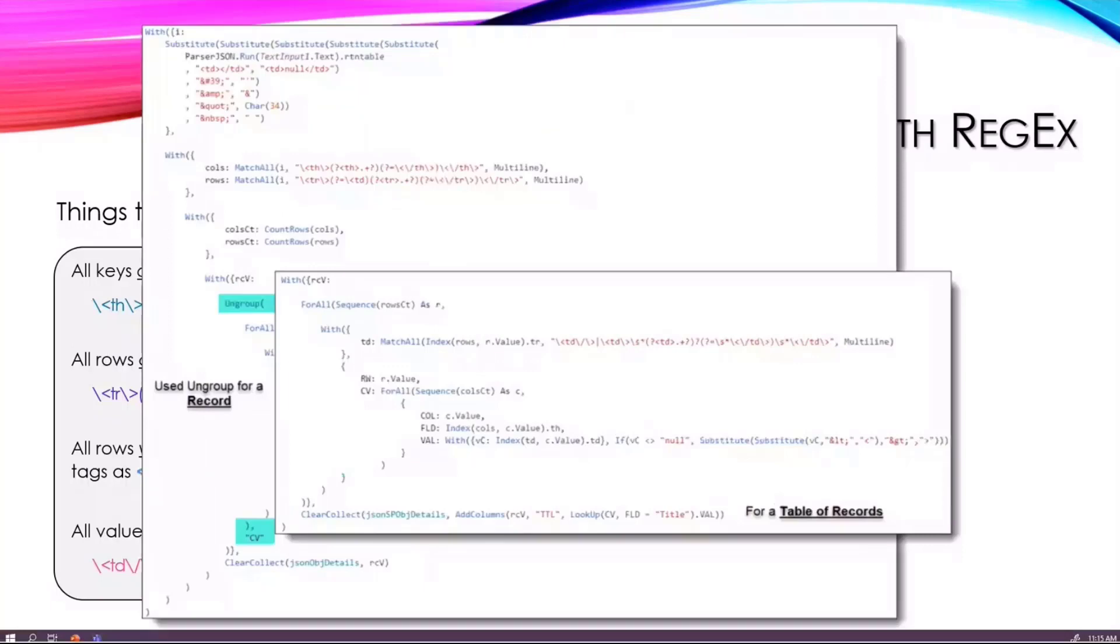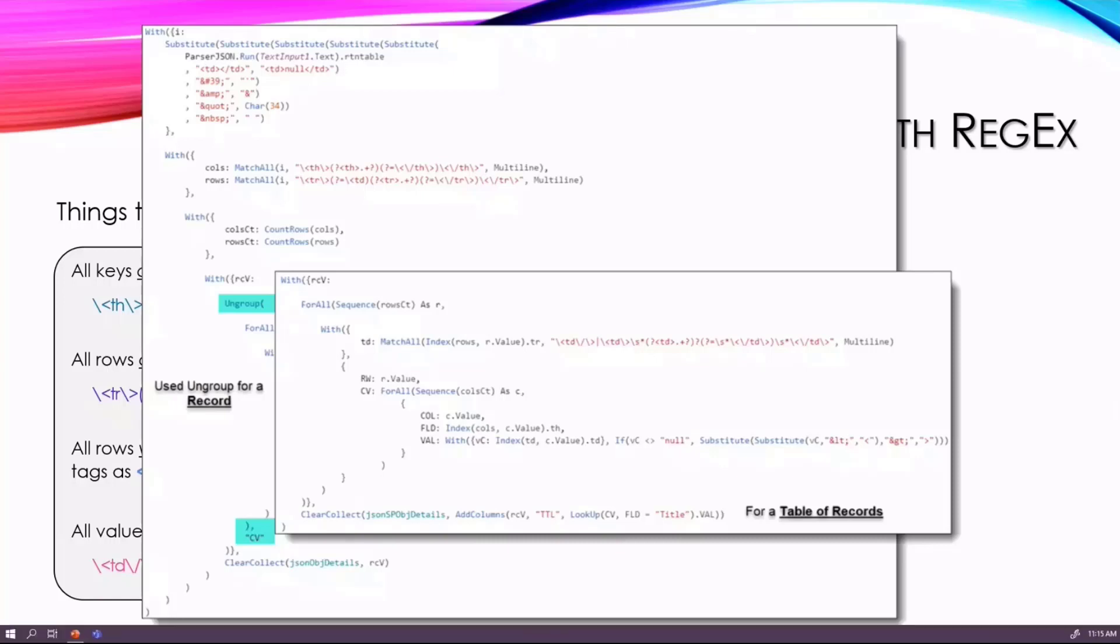This formula or function, set of functions here, I was able to call the Power Automate, give it the information, and have it spit the information back out. If it was a record, I was using an ungroup function to get all of the pieces and parts, but a table of records, I didn't need to do that.